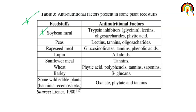Lupin contains alkaloids. Sunflower meal contains tannin. Wheat contains phytic acid, polyphenols, tannin, saponin, glucosinolates, and phytic acid. Barley contains beta-glucans. Wild edible plants contain oxalate, phytate, and tannins. These act like secondary metabolites in plants. This is an important table showing which feed stuff contains which anti-nutritional factor.